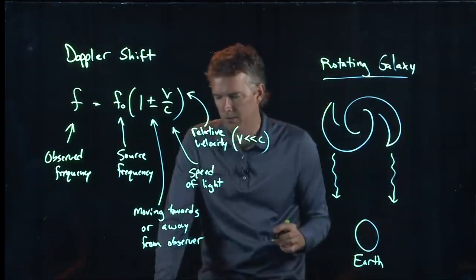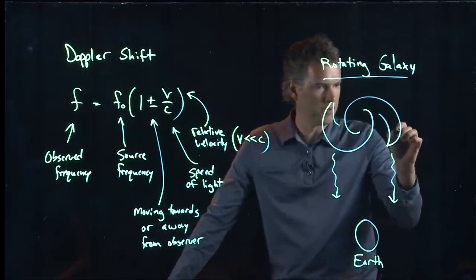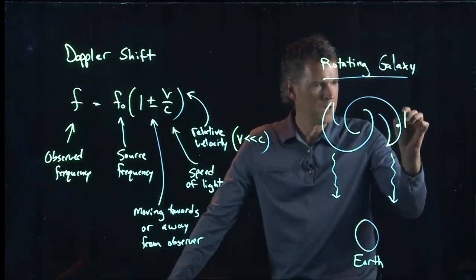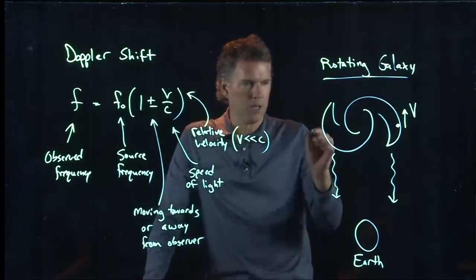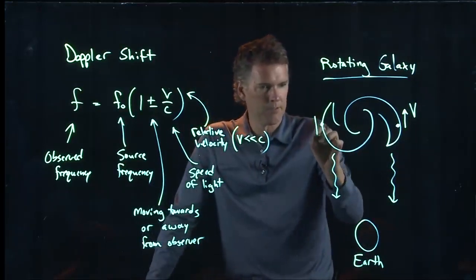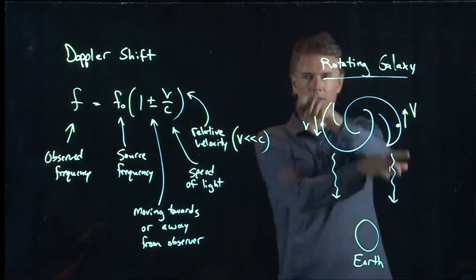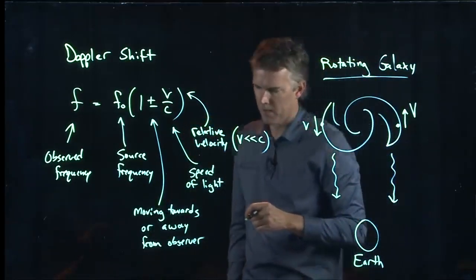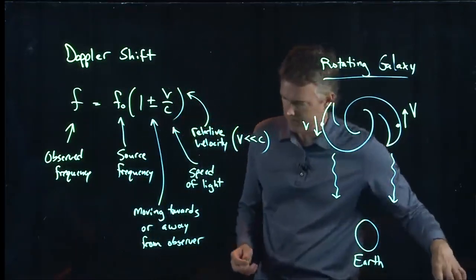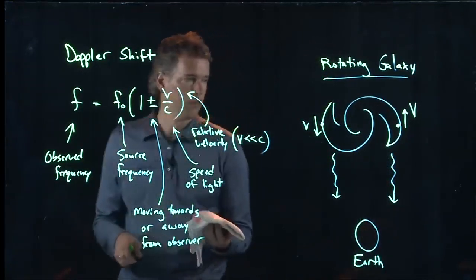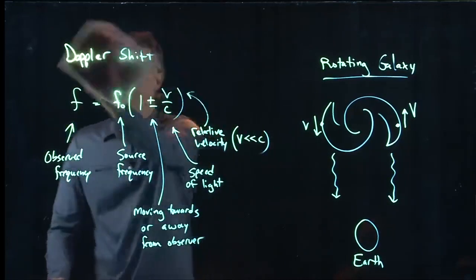And the thing is spinning in this direction. So there is some point here which has some speed V. There's some point on the other side which has some speed V. And so the whole thing is spinning around like that. Alright, let's see if we can calculate some stuff about this galaxy using the Doppler shift.